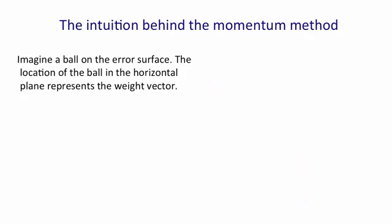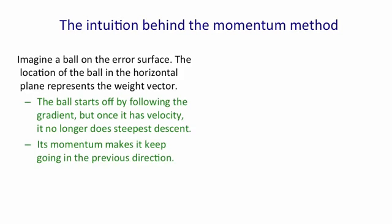I'm going to start with the intuition behind the momentum method. We think of a ball on the error surface where the location of the ball in the horizontal plane represents the current weight vector. The ball starts off stationary, and so initially it will follow the direction of steepest descent. It will follow the gradient. But as soon as it's got some velocity, it will no longer go in the same direction as the gradient. Its momentum will make it keep going in the previous direction.